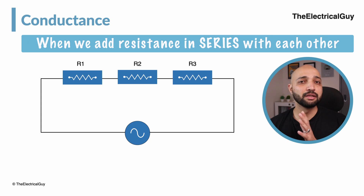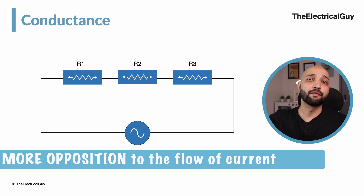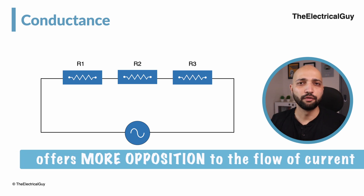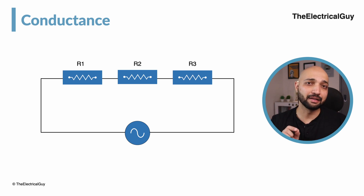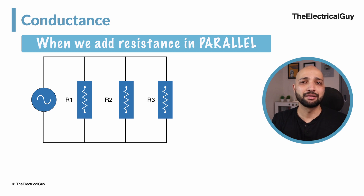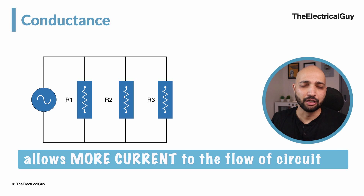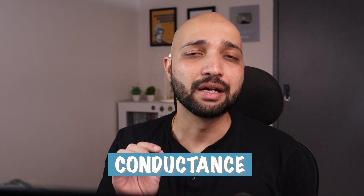When we add resistance in series with each other, the total circuit resistance increases, which offers more opposition to the flow of current, and as a result the current in the circuit decreases. In contrast, if we add resistance in parallel, then the total resistance of the circuit decreases, which allows more current to flow through the circuit. This characteristic is completely opposite to that of resistance.